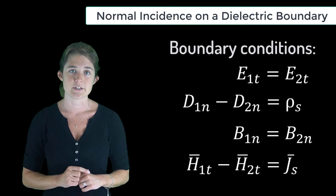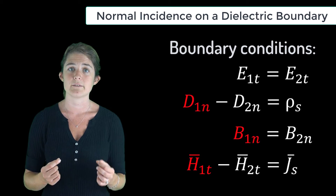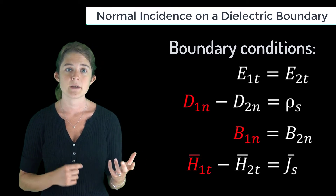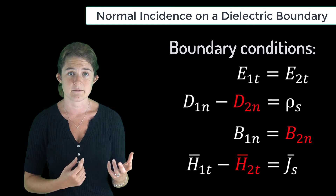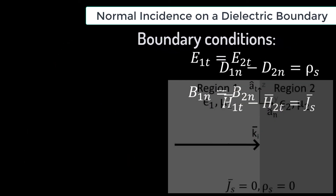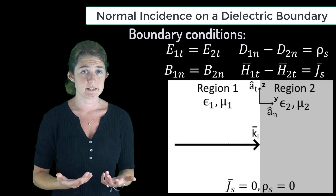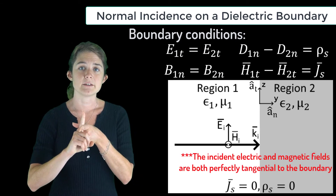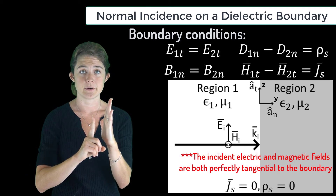From our study of static fields, we have these useful relationships. These relate the tangential and normal components of the electric and magnetic fields in the first medium to those in the second medium. Note that since we have normal incidence, both the electric and magnetic fields of the incident wave are perfectly tangential to the boundary.